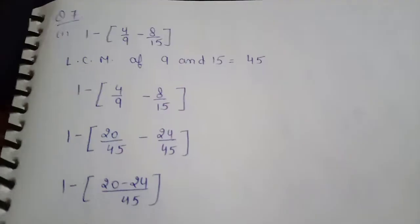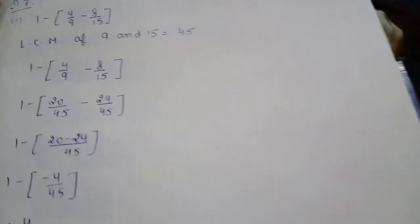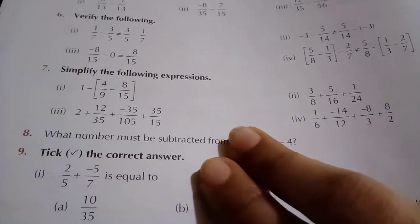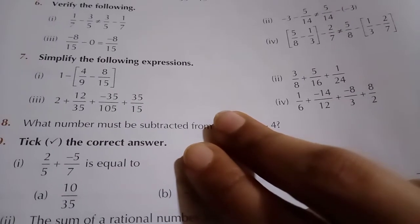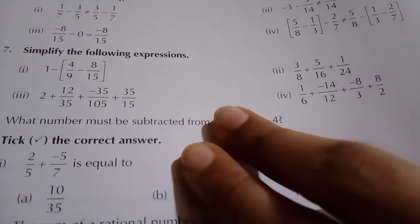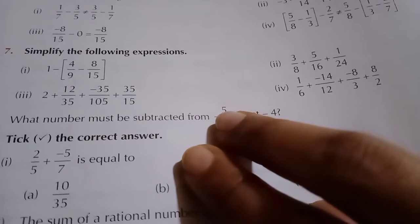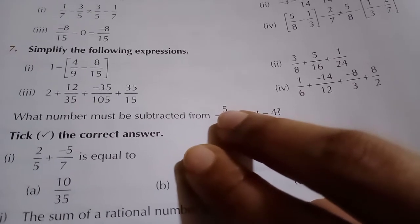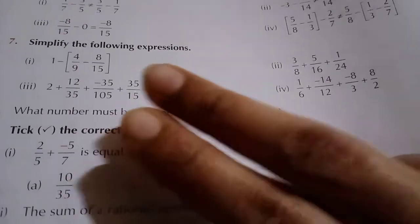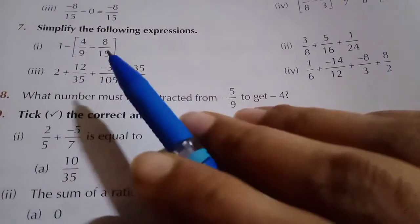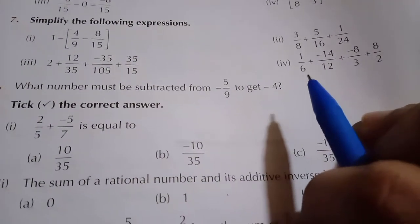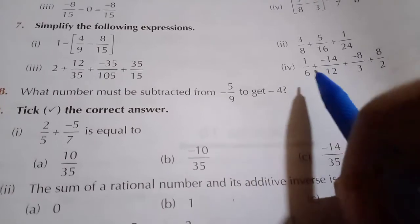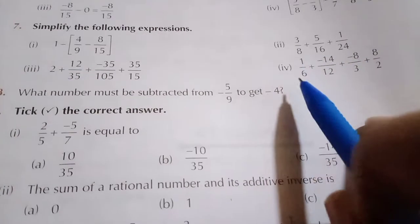Now moving to question number 7: simplify the following equations. This is similar to question number 3 which we have done, only now brackets are there, numbers have enlarged, and subtraction signs are there. There are four parts. When simplifying, you have to perform whatever operations are given — generally addition and subtraction of rational numbers. Whenever solving this kind of question, first convert any double signs into a single sign, for example plus minus becomes minus.